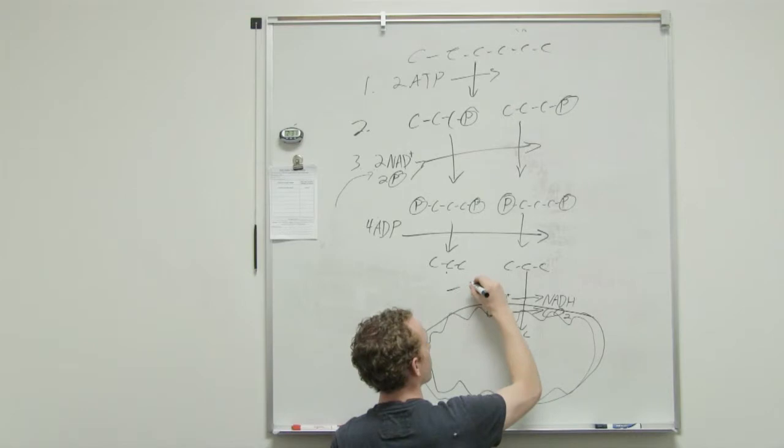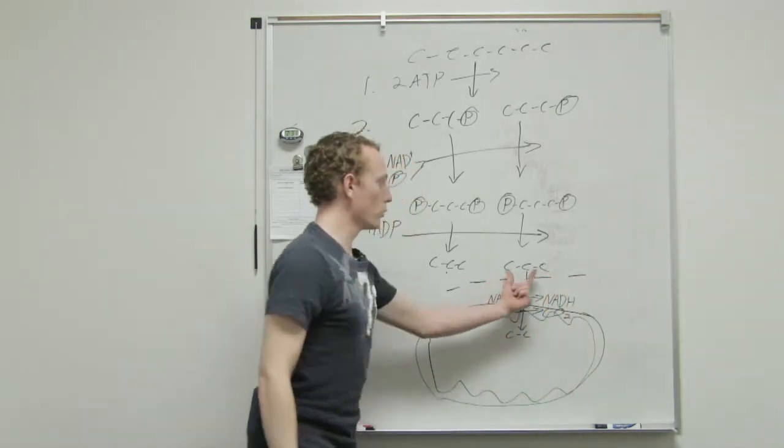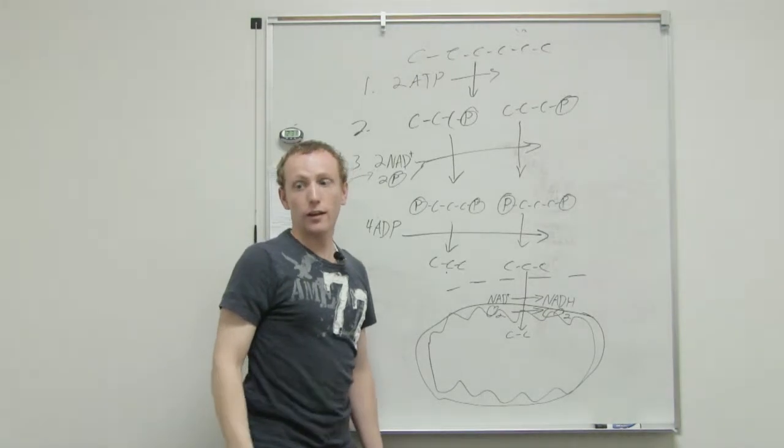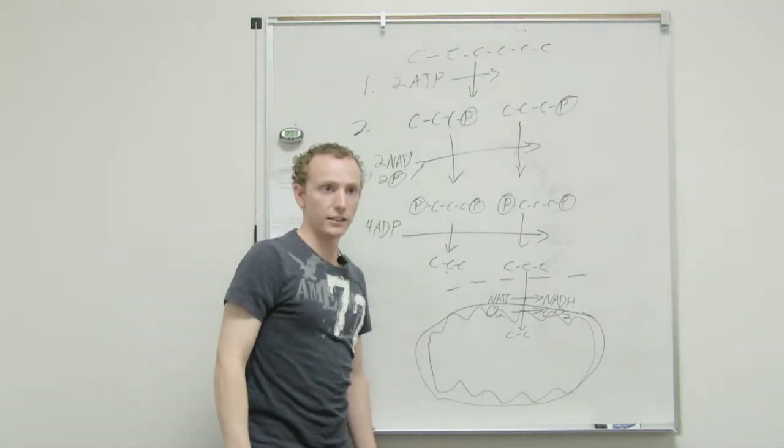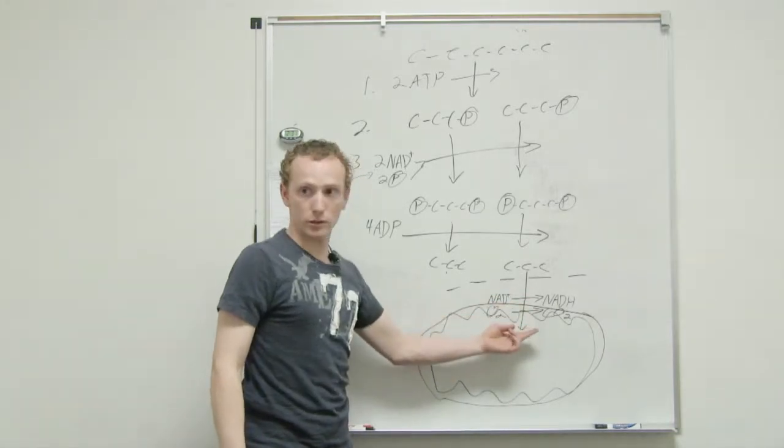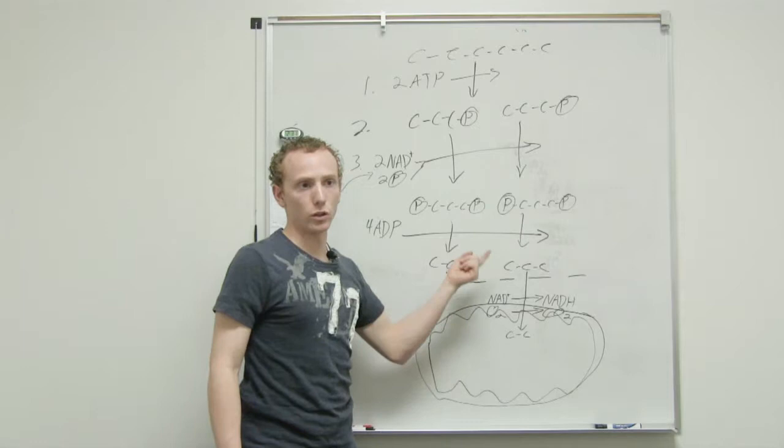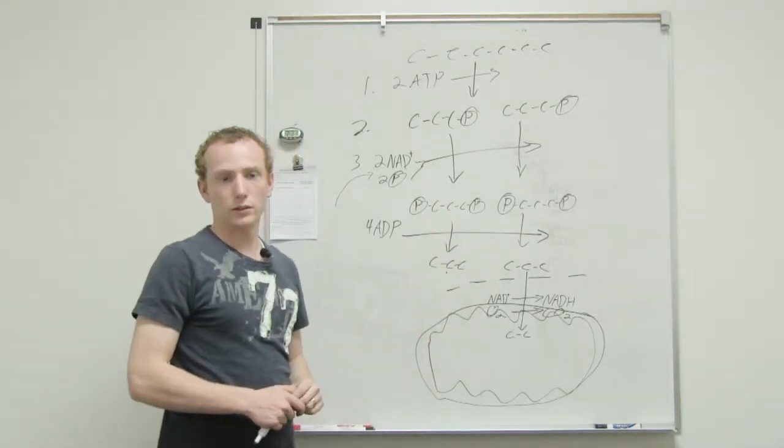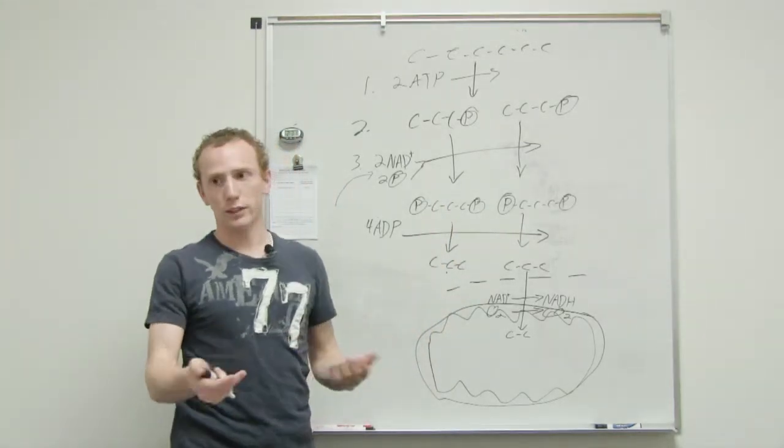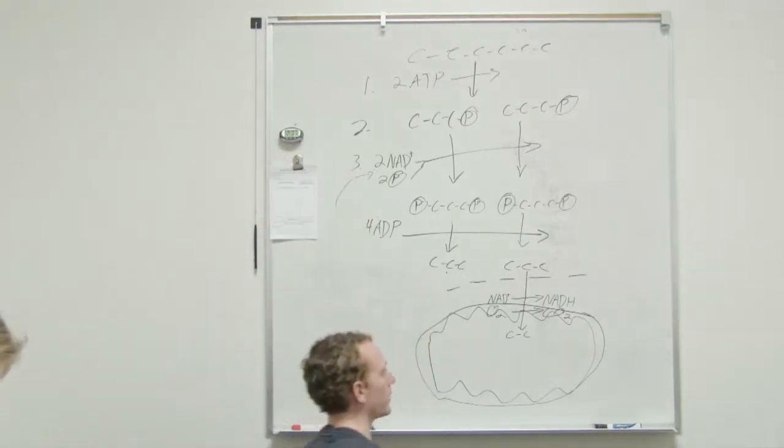From this point forward, I am talking about one pyruvate molecule. Questions could say something about a glucose molecule, so you would double these numbers. Because they could either specify a pyruvate molecule or a glucose molecule. And a glucose molecule makes two pyruvate. Does that make sense? I just wanted to clarify that real quick.